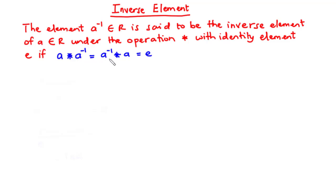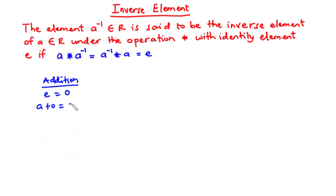What we are saying is: if an element a is combined with its inverse, the result equals the identity element. In the previous video we established that under addition the identity element e is equal to zero, so that a plus zero equals zero plus a equals a. When you combine a and zero under addition, the result does not change.